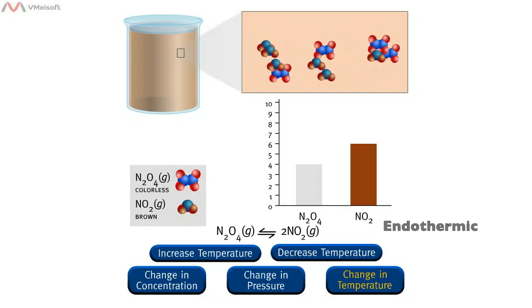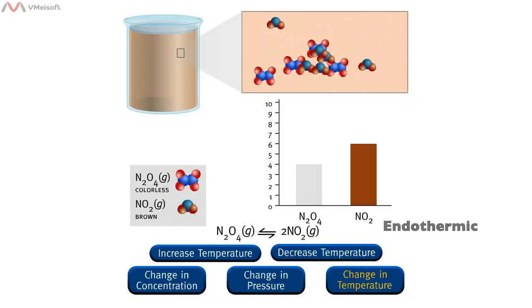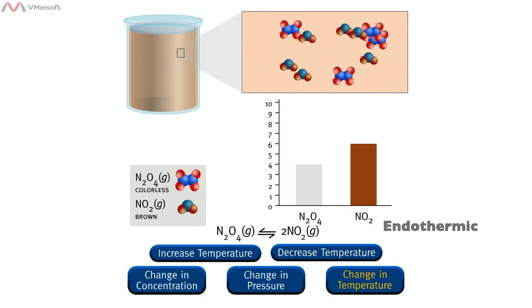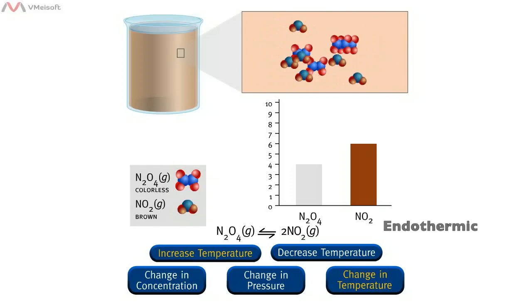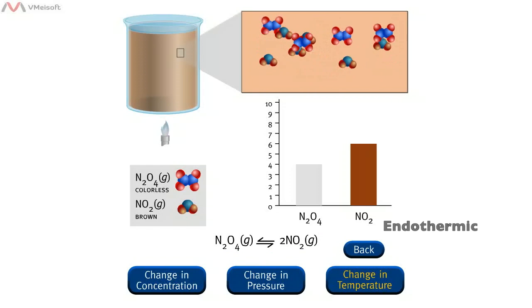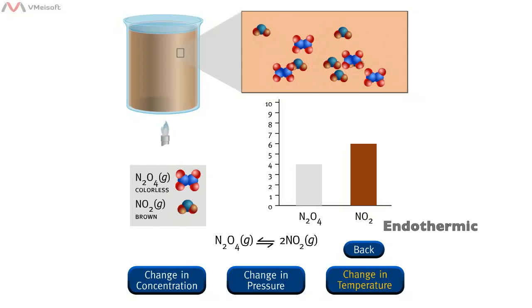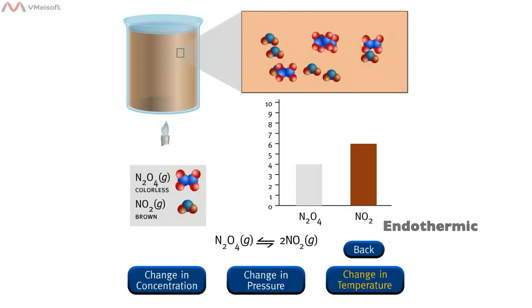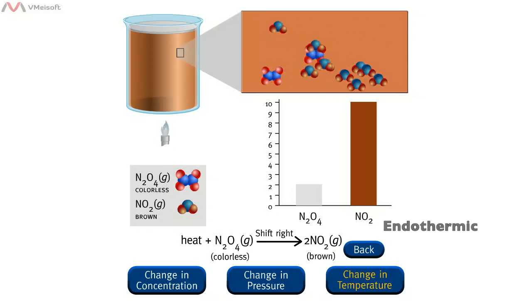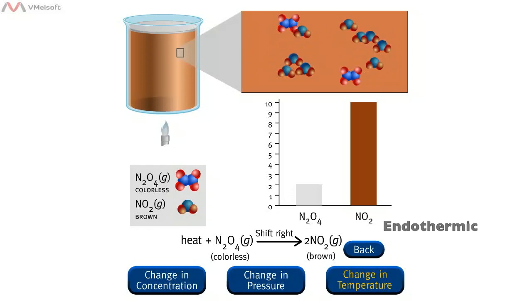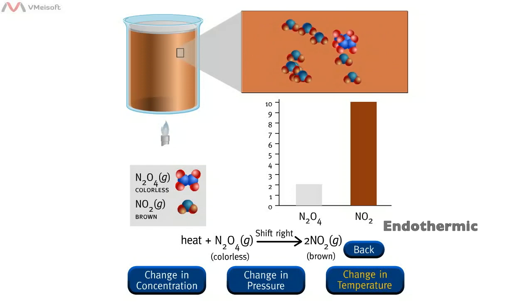Consider the following reaction at equilibrium. Because NO₂ is a brown gas, the equilibrium mixture has a brown color, as shown in the macroscopic view. When you increase the temperature of the system by adding heat, Le Châtelier's principle states that this stress will be partially offset. This reaction is endothermic, so you can think of heat as a reactant that must be supplied to the reacting mixture. The system can partially remove the added heat by shifting to the right, producing more NO₂ and decreasing N₂O₄, as you can see in the microscopic view. As more NO₂, a brown gas, is produced, the color of the equilibrium mixture darkens, as you can see in the macroscopic view.